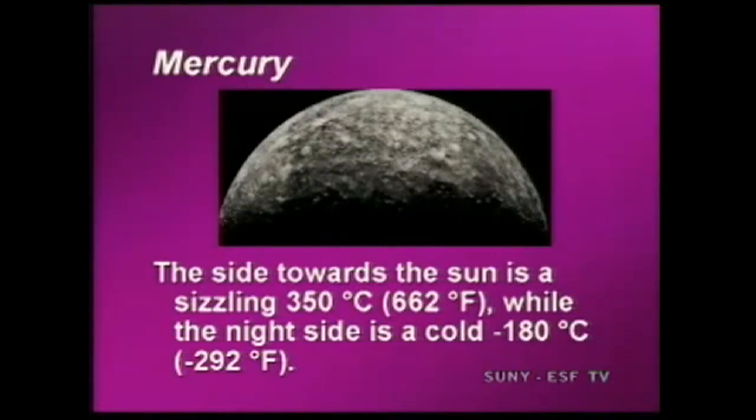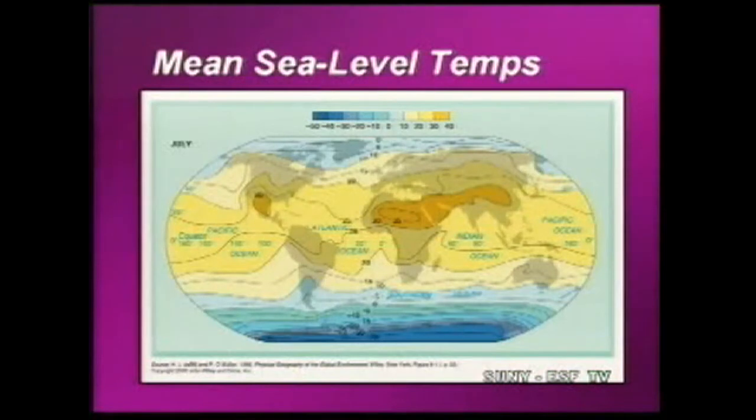But if we look at the Earth, and here's a map with basic temperatures, average temperatures over the surface, there really isn't a huge difference. And there's not a huge difference between night and day. Now, why is that? What is the big difference between Mercury and the Earth?